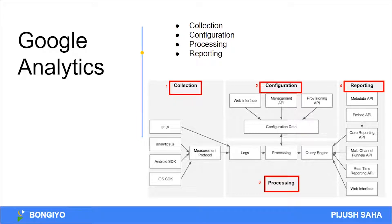When we have the configuration of Google, the data will have a log file. They will have a server. Then we have a process. Ultimately, we have to see this information. We have a reporting section, and we have the dimensions and metrics, or we have the same type of data.